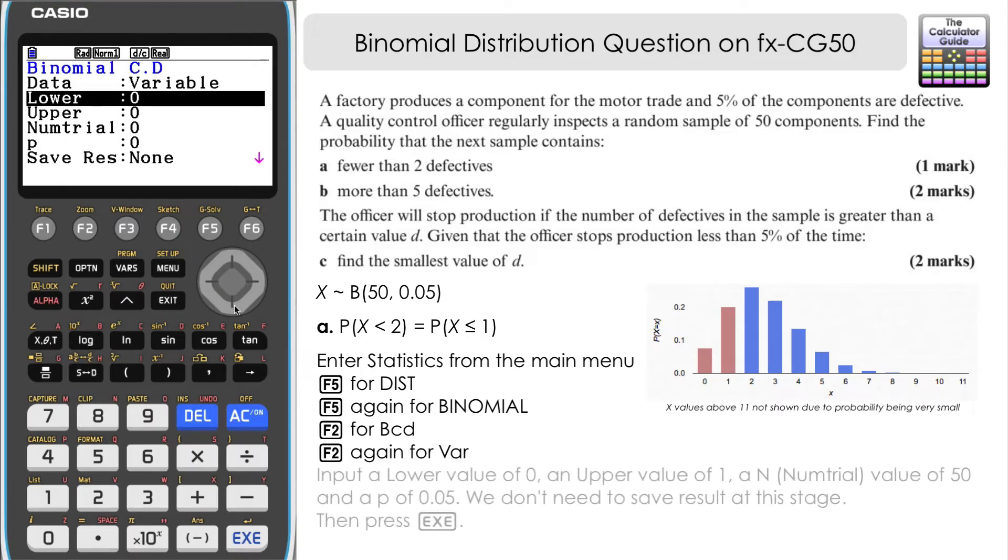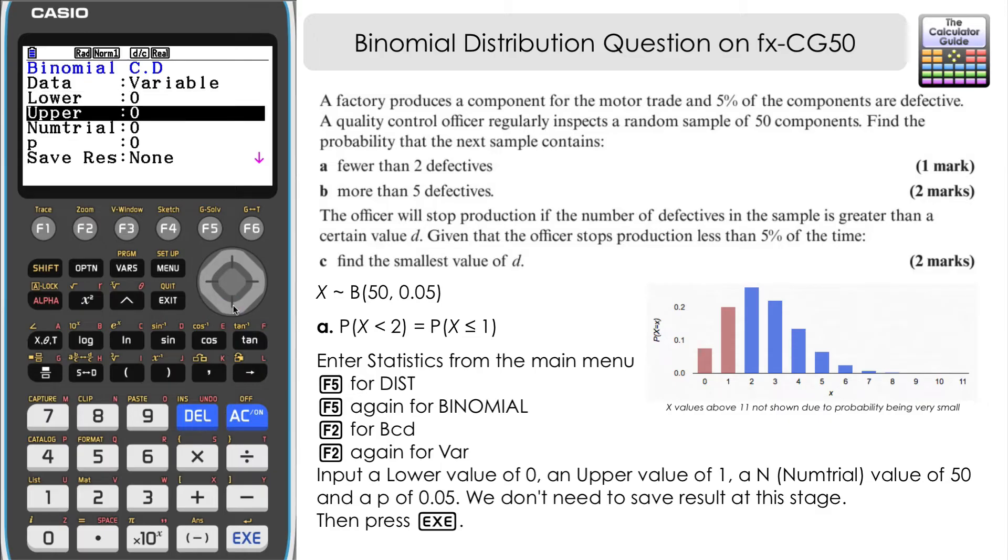Now, we need to input our information here. So our lower limit, well, that is essentially zero in this particular question. So zero. So if we had zero defective components and the upper limit, well, that would be one. So essentially, what is the probability of being from zero to one?